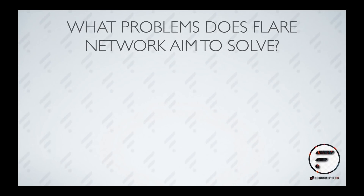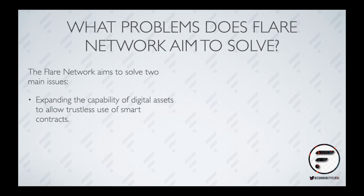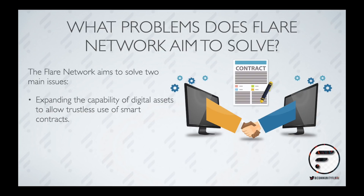What problems does Flare Network aim to solve? The Flare Network aims to solve two main issues. The first is expanding the capability of digital assets to allow trustless use of smart contracts. Did you know that 75% of the value that exists on public blockchain projects are currently unable to utilize smart contracts? Flare will change this by allowing assets such as XRP to benefit from smart contract functionality, bringing new use cases like decentralized finance, commonly known as DeFi.